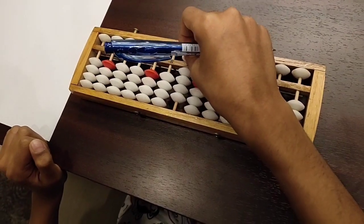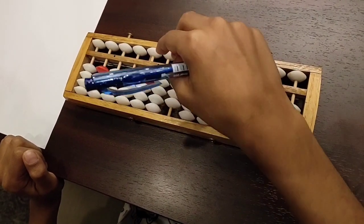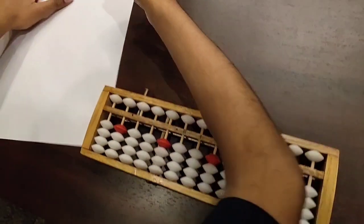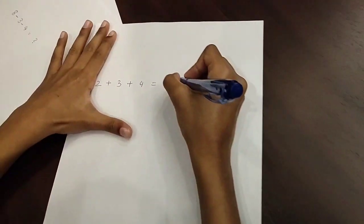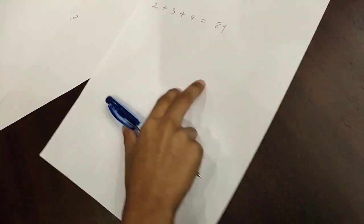Because the top bead represents 5 and the bottom 4 beads represent 4. So now let's write the answer 9.